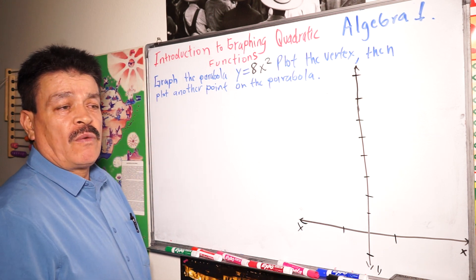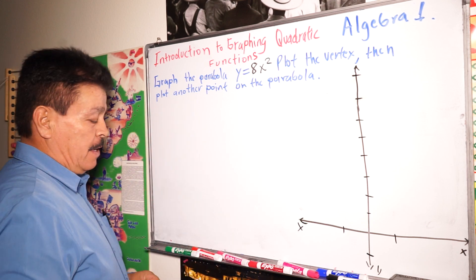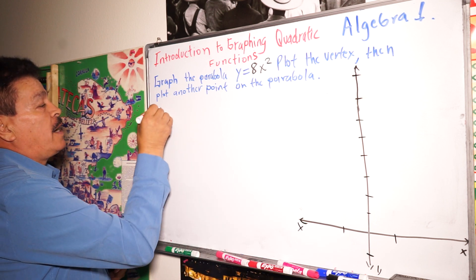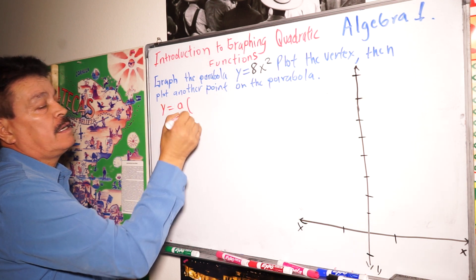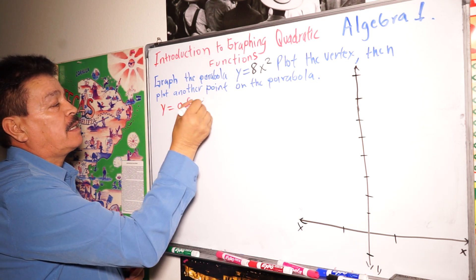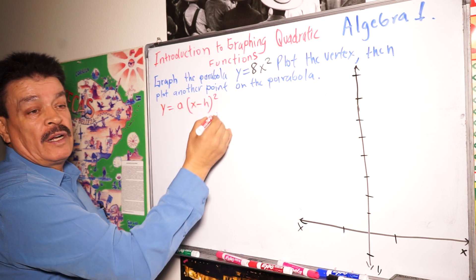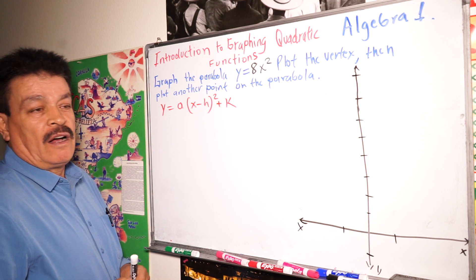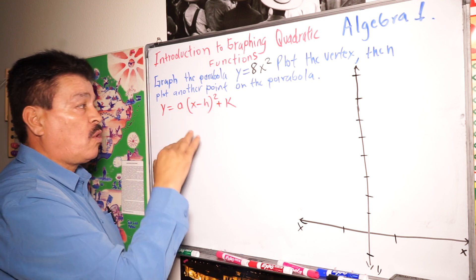The vertex form for the parabola that opens up or down is y equals a times x minus h to the second power plus k. This is the vertex form of the parabola which opens up or down.